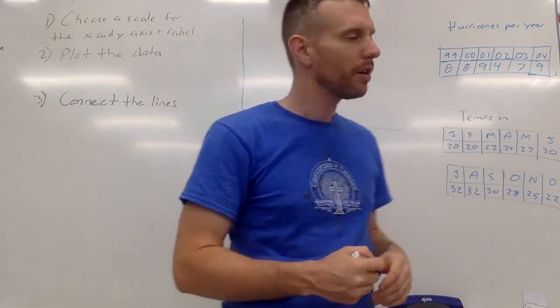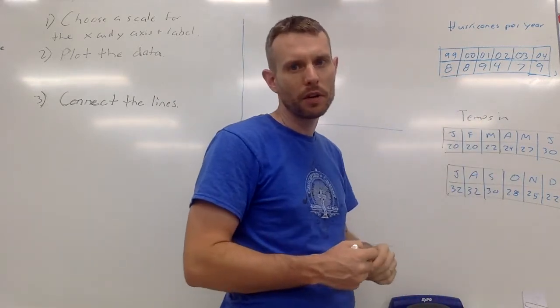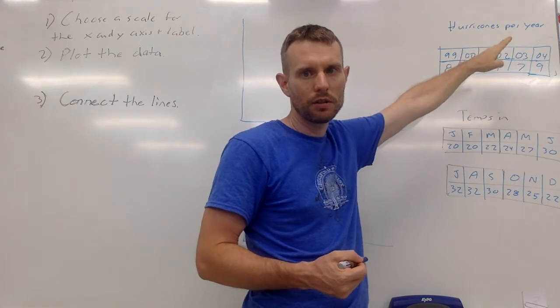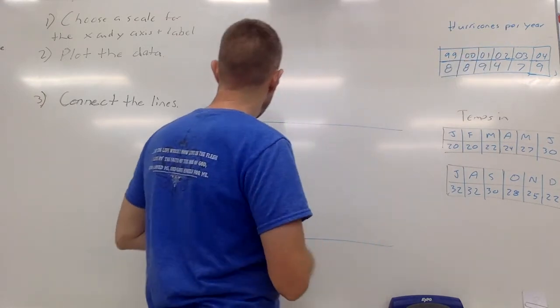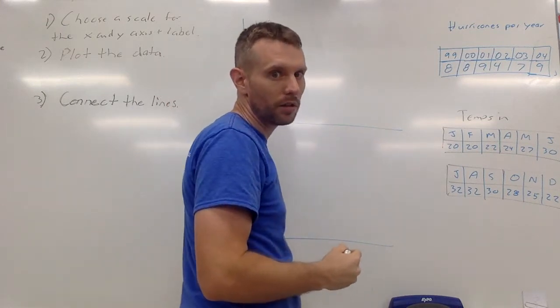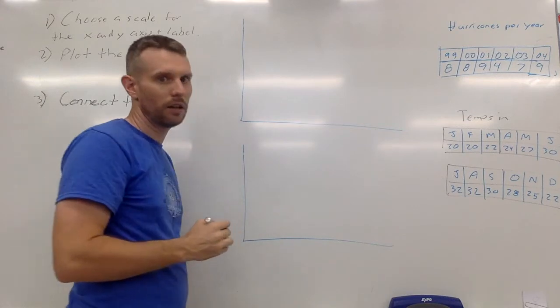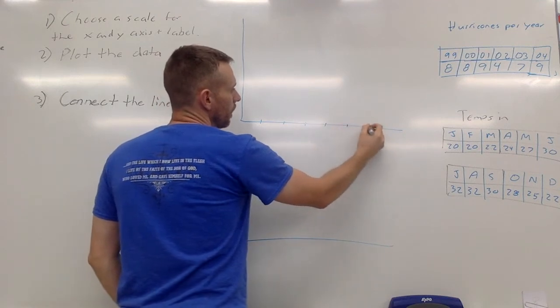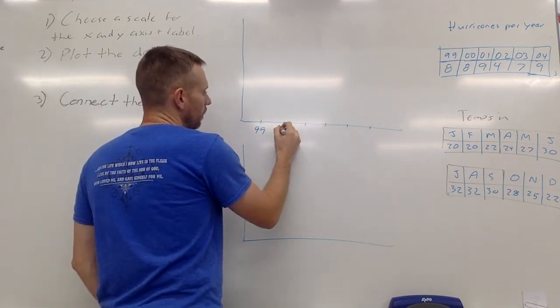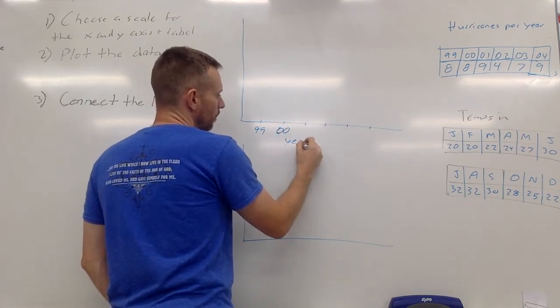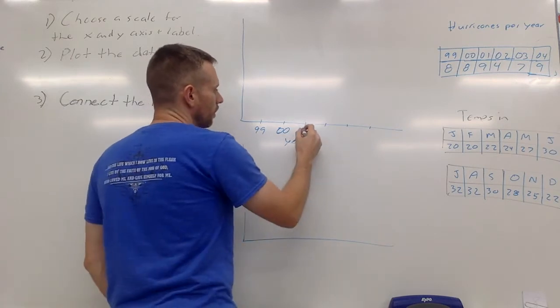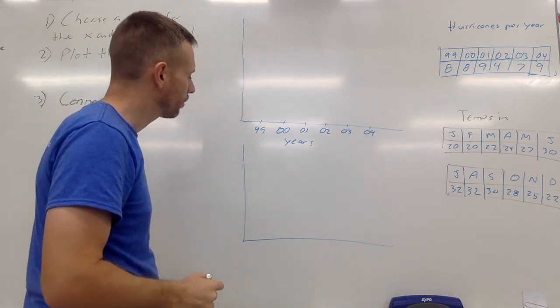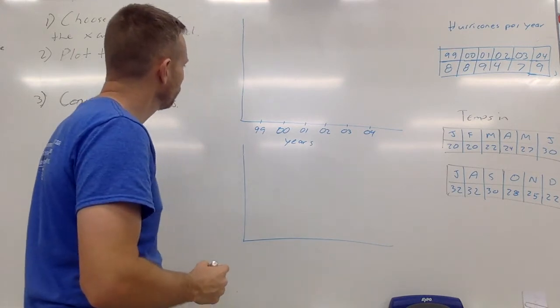First thing you want to learn to do is choose a scale for the x and y axis and label it. So the first example here is hurricanes per year - the number of hurricanes per year. These are the years: 1999, the year 2000, 2001, 2002, and so on. I'm going to put my time on the bottom here, and you really need to go ahead and use a ruler and make sure these things are evenly spaced out. This is going to be 1999, this is 2000, I'm going to label this 'years.'